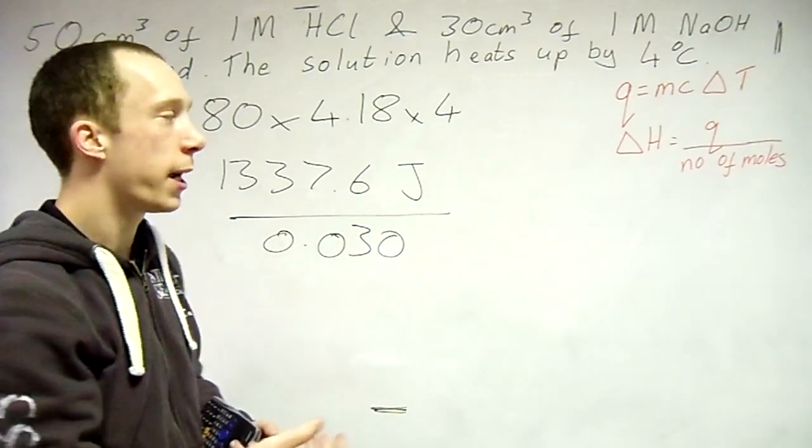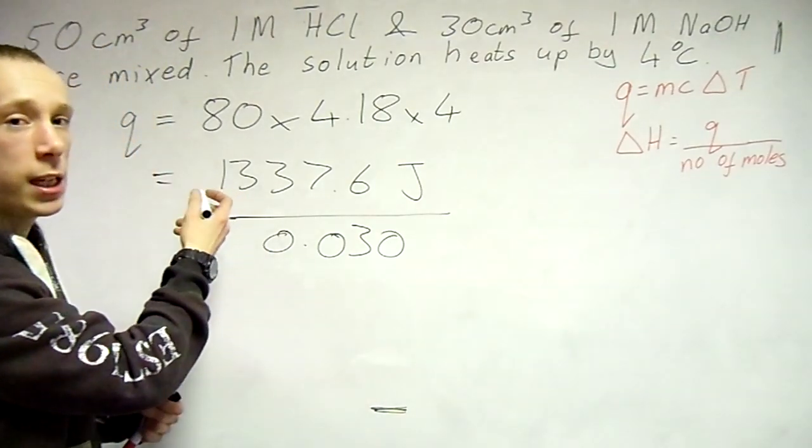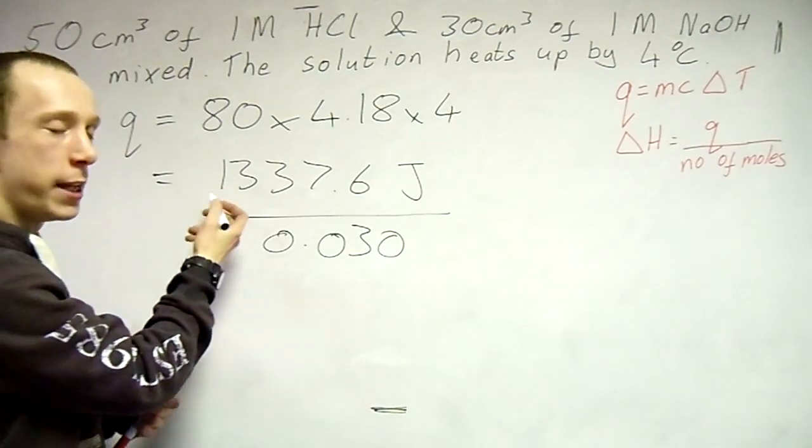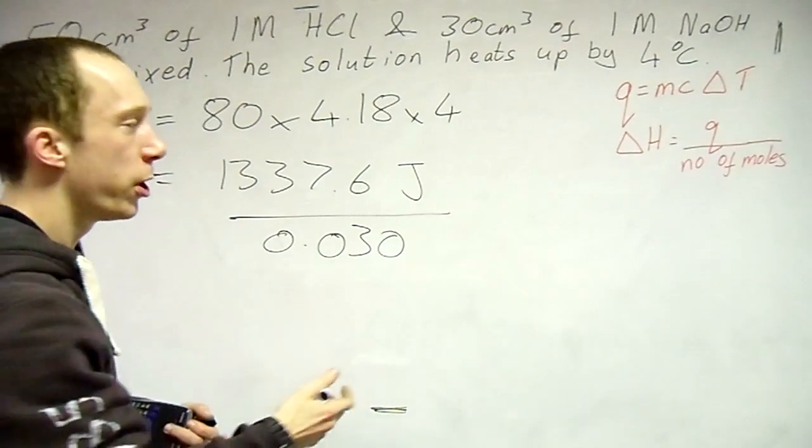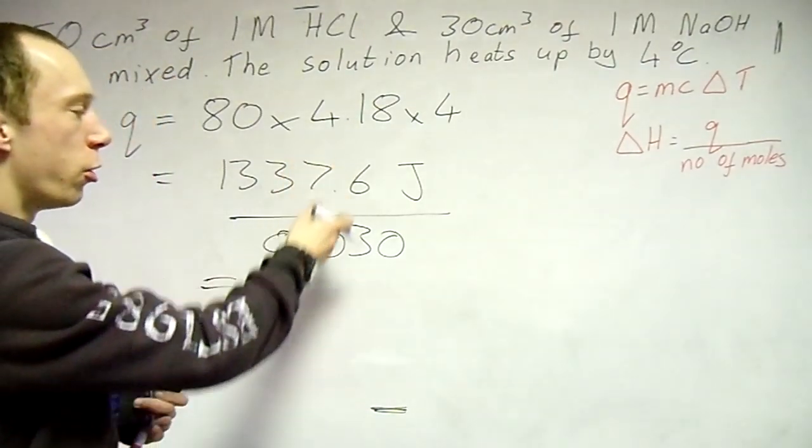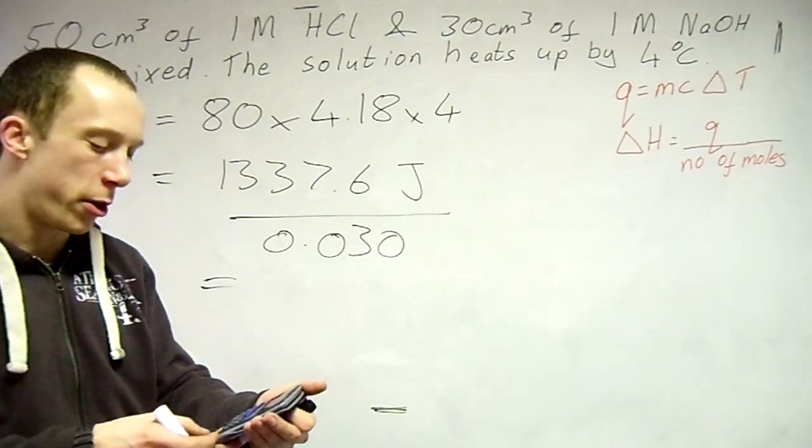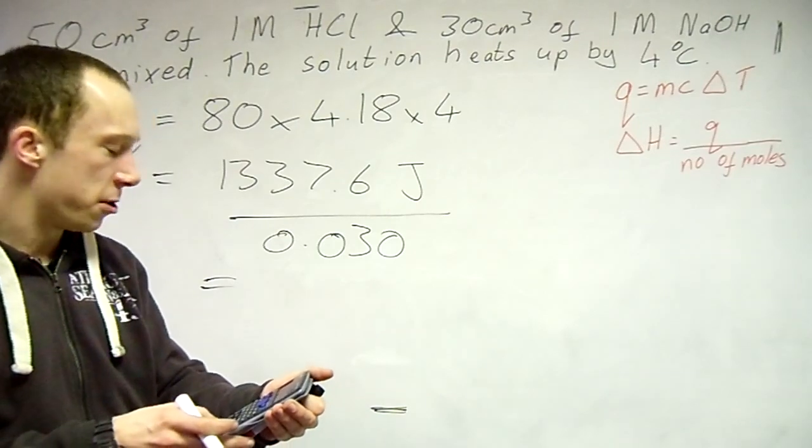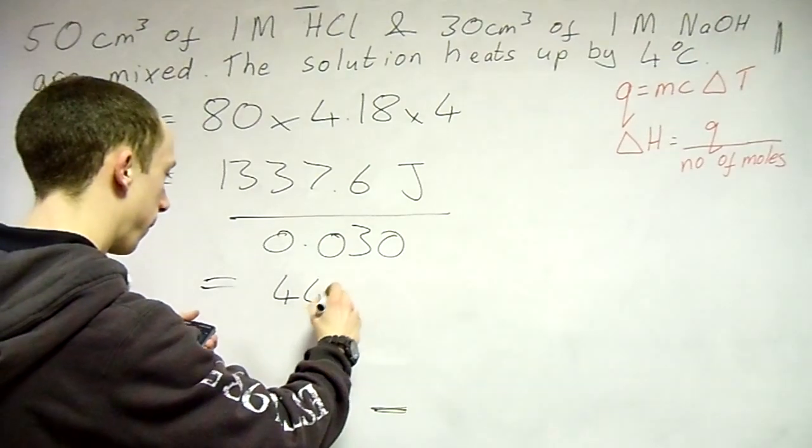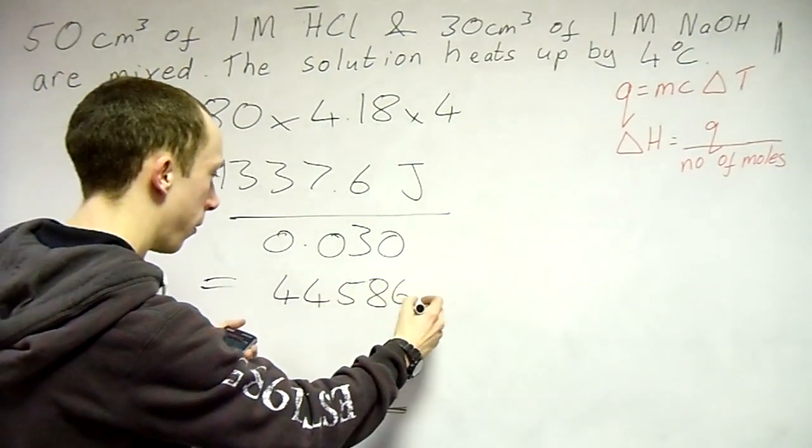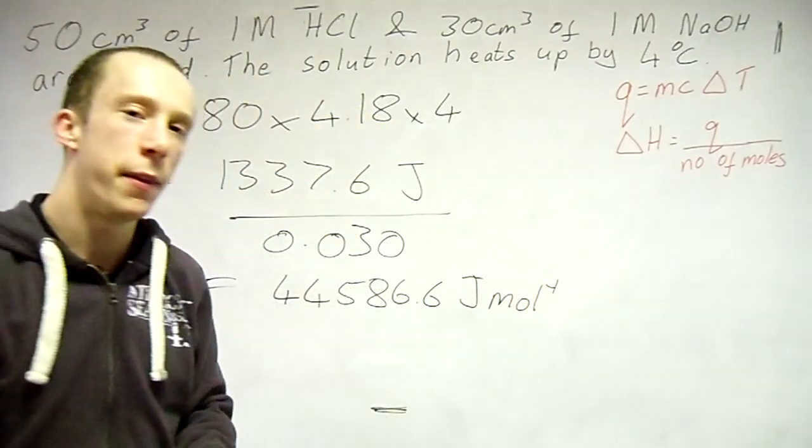And now Q divided by number of moles. Now again you might be thinking, why haven't I changed the sign here? You can do. So the actual energy in the chemical system would now have been lost. It would have been negative. I'm just going to leave that just so you don't get confused with the previous one. So punch these into your calculator. So 1,337.6 divided by 0.03 equals 44,586.6 joules per mole. And there is your answer.